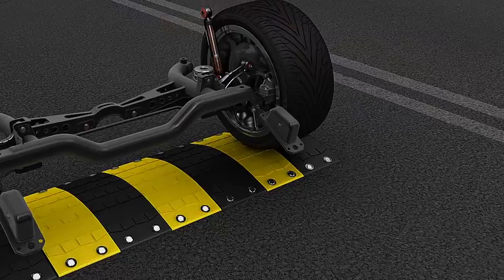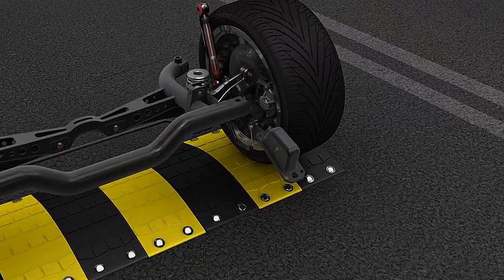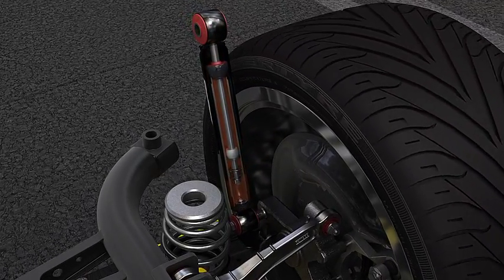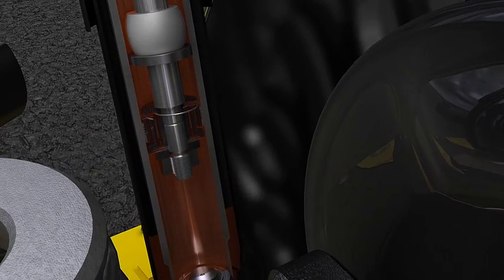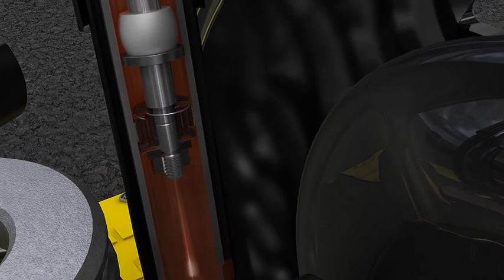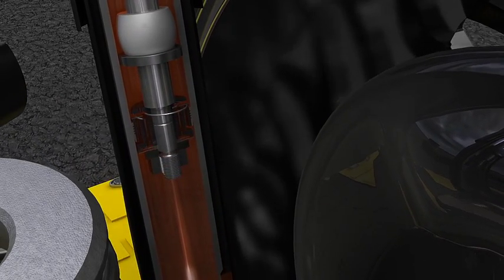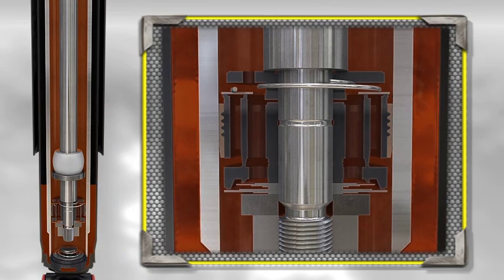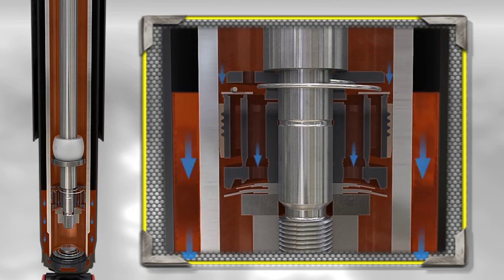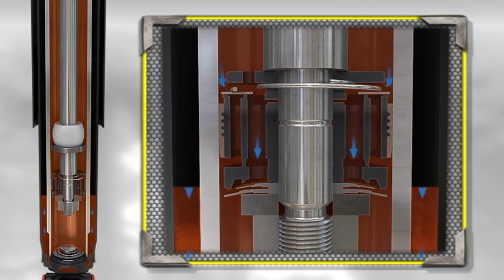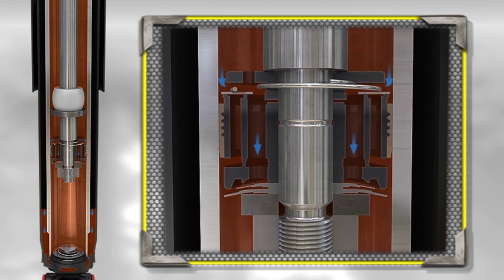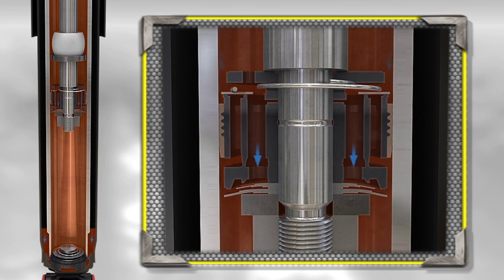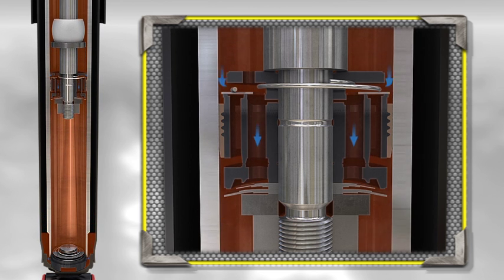During the rebound movement, the piston rod leaves the working chamber in a controlled manner due to the effect of the rebound valve. This movement creates a vacuum which causes oil suction from the reserve tube, equivalent to the volume of the piston rod having left the pressure tube during the rebound movement. Thanks to this effect, the pressure tube is constantly full of oil.